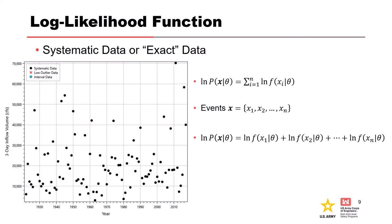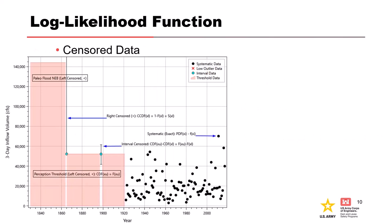This is similar to what we do with maximum likelihood estimation. That's just the systematic data — we also have other data types. There's interval sensor data, which includes historical floods, paleo stage indicators, and PSIs. Interval data is represented by a range of flow for a given year, and in Best Fit we also include a most likely value — that little blue dot. Then there's left-censored data, which means we believe the flow is less than some threshold. This is represented by shaded areas — in flow frequency, we call these perception thresholds.